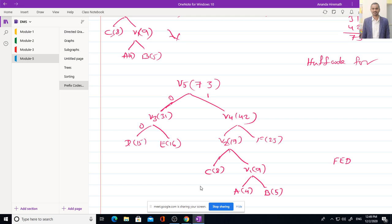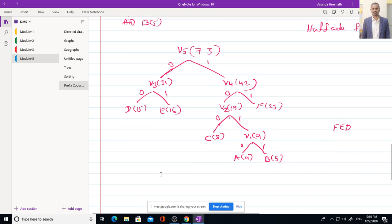0, 1. Left side 0, right side 1. 0, 1. 0, 1. Now F. Let us see what is the sequence to get F. Where is F? Here. To reach F, what is the code? 1 and 1. So for F we have 1, 1.